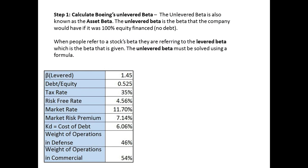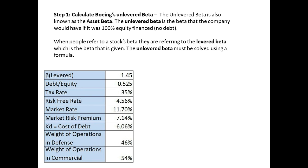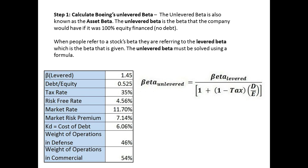Step 1: Calculate Boeing's unlevered beta. Unlevered beta is also known as the asset beta — the beta the company would have if it was 100% equity financed, meaning it has no debt. When people refer to a stock's beta, they are referring to the levered beta. The unlevered beta must be solved using this formula: beta unlevered equals levered beta divided by 1 plus (1 minus the tax rate) times the debt-to-equity ratio. With a levered beta of 1.45, a tax rate of 0.35, and a debt-to-equity ratio of 0.525, this gives us an unlevered beta of 1.0811.